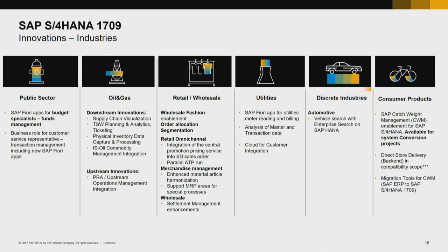Let me go to automotive. S4HANA now provides vehicle search, leveraging enterprise search on S4HANA. Vehicle search can be processed by general attributes like status, configuration characteristics, historic data, business partners, or any related document based on embedded enterprise search on SAP HANA. For the oil and gas industry, here are some downstream innovations, like supply chain visualization that brings the visualization of open shipments, showing all relevant inventory and their associated alerts in a geospatial presentation.